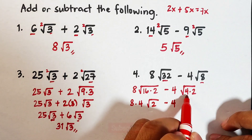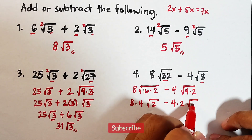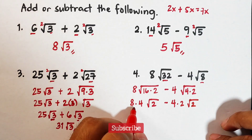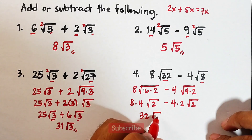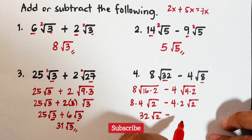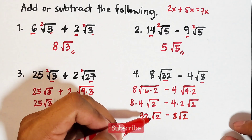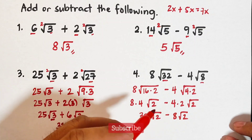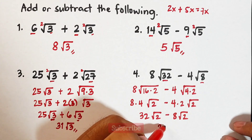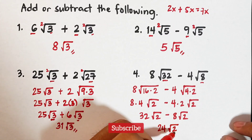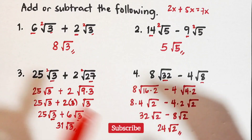For the square root of 8, factor it as 4 times 2. The square root of 4 is 2, so it becomes 4 times 2 times square root of 2, which is 8 square root of 2. Now both terms are the same: 32 square root of 2 minus 8 square root of 2. Subtracting gives 24 square root of 2.